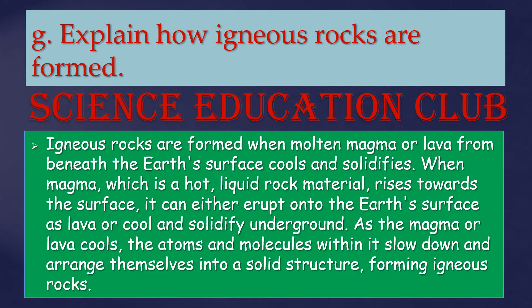Explain how igneous rocks are formed. Igneous rocks are formed when molten magma or lava from beneath the Earth's surface cools and solidifies. When magma rises towards the surface, it can either erupt onto the Earth's surface as lava, or cool and solidify underground. As the magma or lava cools, the atoms and molecules within it slow down and arrange themselves into a solid structure, forming igneous rocks.